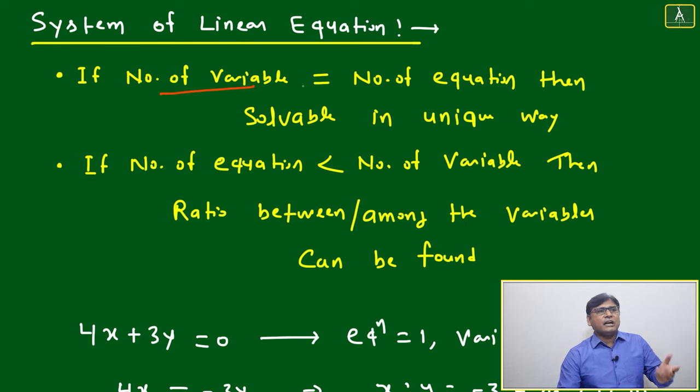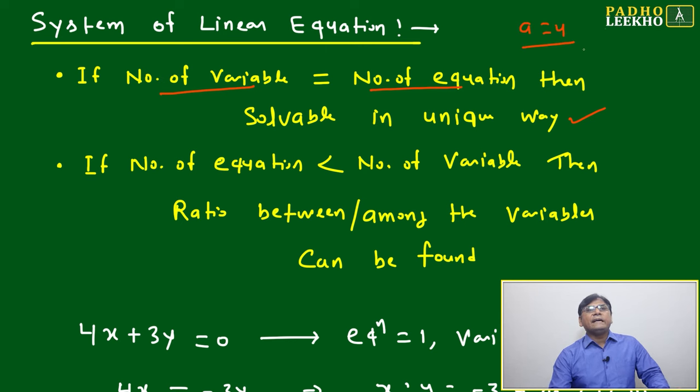One thing is very sure: we know since childhood that if the number of variables equals the number of equations, then it will be solvable in a unique way. For example, if a = 4, then we know a is exactly equal to 4. Here, the number of variables is 1 (that is a) and the equation is also 1, so you get the unique solution a = 4. Same thing: 3a = 15, then it's solvable, a = 5, just a very simple way.